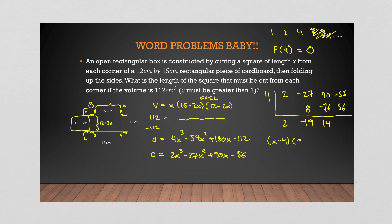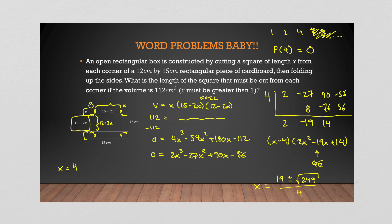After synthetic division, we get the factored form (x − 4)(2x² − 19x + 14). Plugging the quadratic into the quadratic formula gives (19 ± √249) / 4. So we get three solutions total: x = 4 from the first factor, and then x ≈ 0.81 and x ≈ 8.69 from the quadratic.